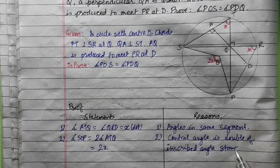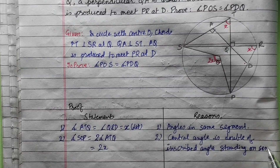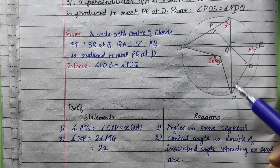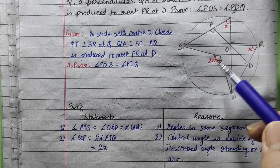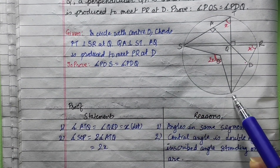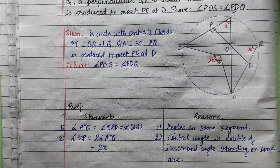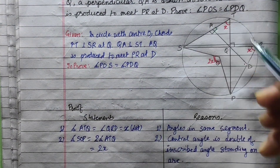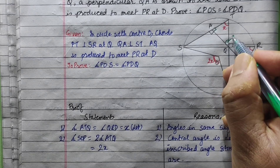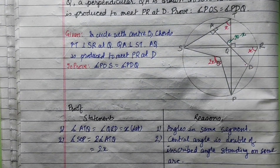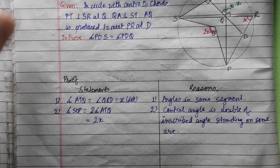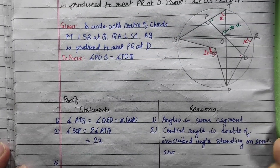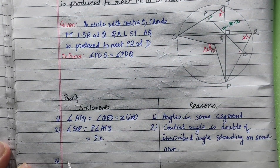The center angle is double, or twice, the inscribed angle. This angle is standing on the same arc. STP is equal to ATQ. This gives us angle SOP, standing on arc SP, which is double.